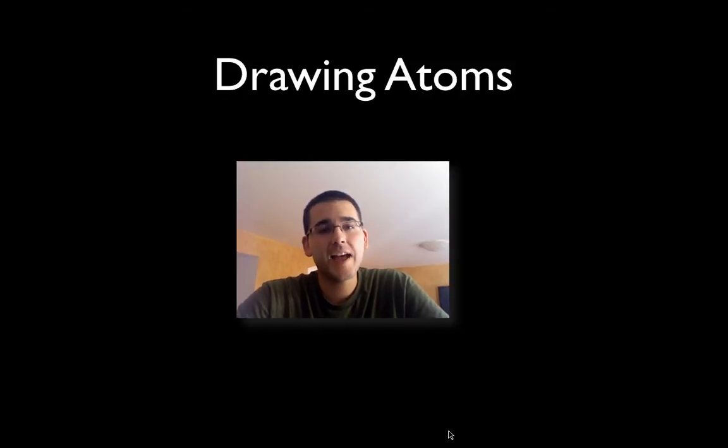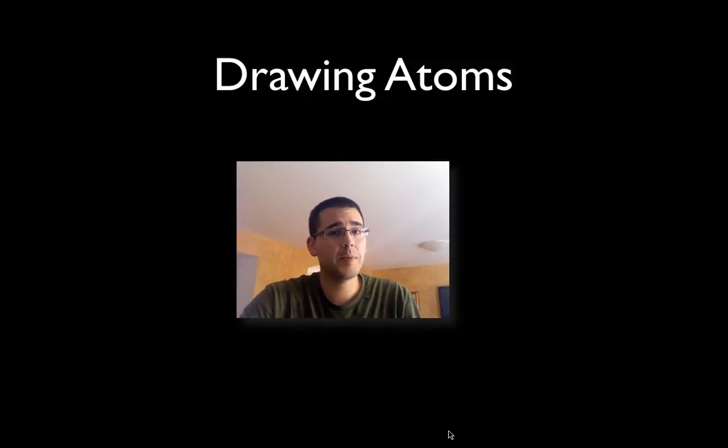Hi. In this podcast, you're going to be learning how to draw atoms. You're going to need three things before we get started: a pen or pencil, your periodic table, and a blank piece of paper or notebook paper to write on. If you need to pause the video and come back, you're welcome to do so.